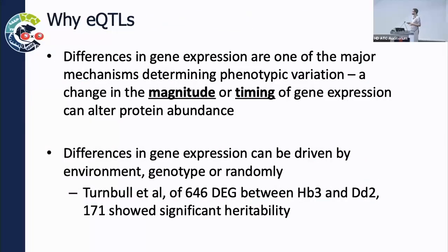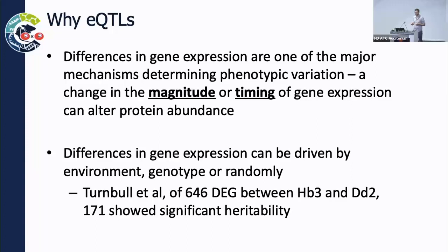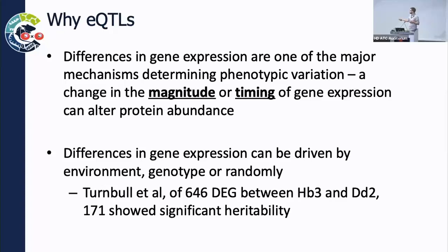The work I'm going to talk about today is based around expression QTL mapping — essentially using the same approach to understand how we can explain which genes drive variation in gene expression. This could be either the magnitude of gene expression or shifts in the timing of gene expression through the cell cycle. Some previous work from Mike Ferdig's lab showed that variation in gene expression could be driven by environmental changes, different parasite genotypes, or random processes, and that a very large amount of differential expression between two lines is driven by parasite genotype. So we have good reason to go after the genetics that underpins this variation.